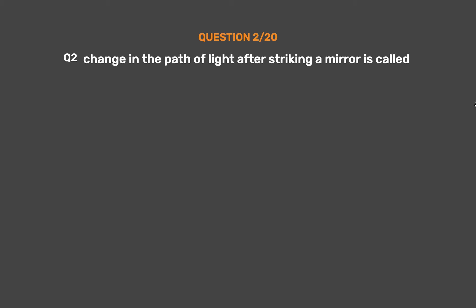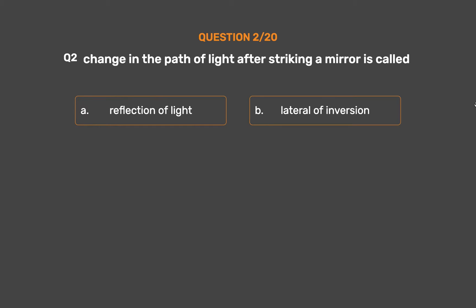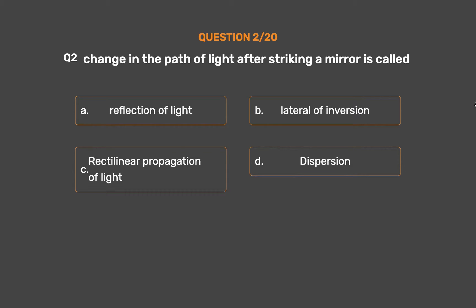Question number 2. Change in the path of light after striking a mirror is called: option A, reflection of light; option B, lateral inversion; option C, rectilinear propagation of light; option D, dispersion. The correct answer is option D, dispersion.